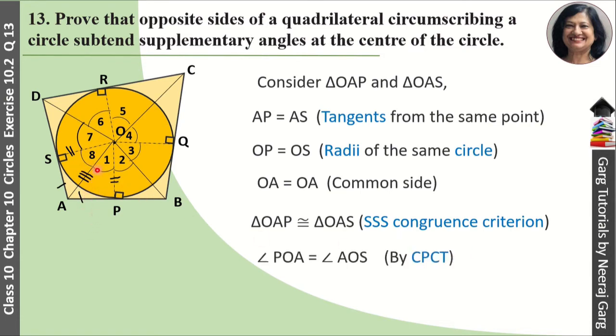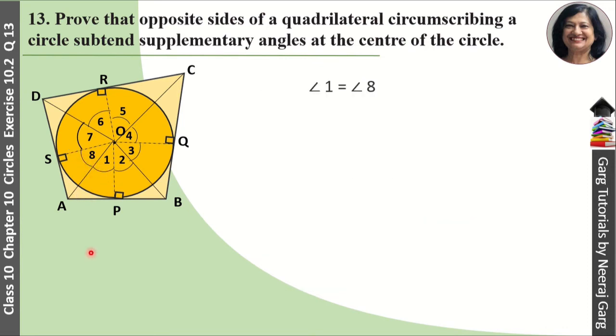By CPCT, angle POA equals angle AOS, which means angle 1 equals angle 8. Similarly, we can prove that angle 2 equals angle 3, angle 4 equals angle 5, and angle 6 equals angle 7.